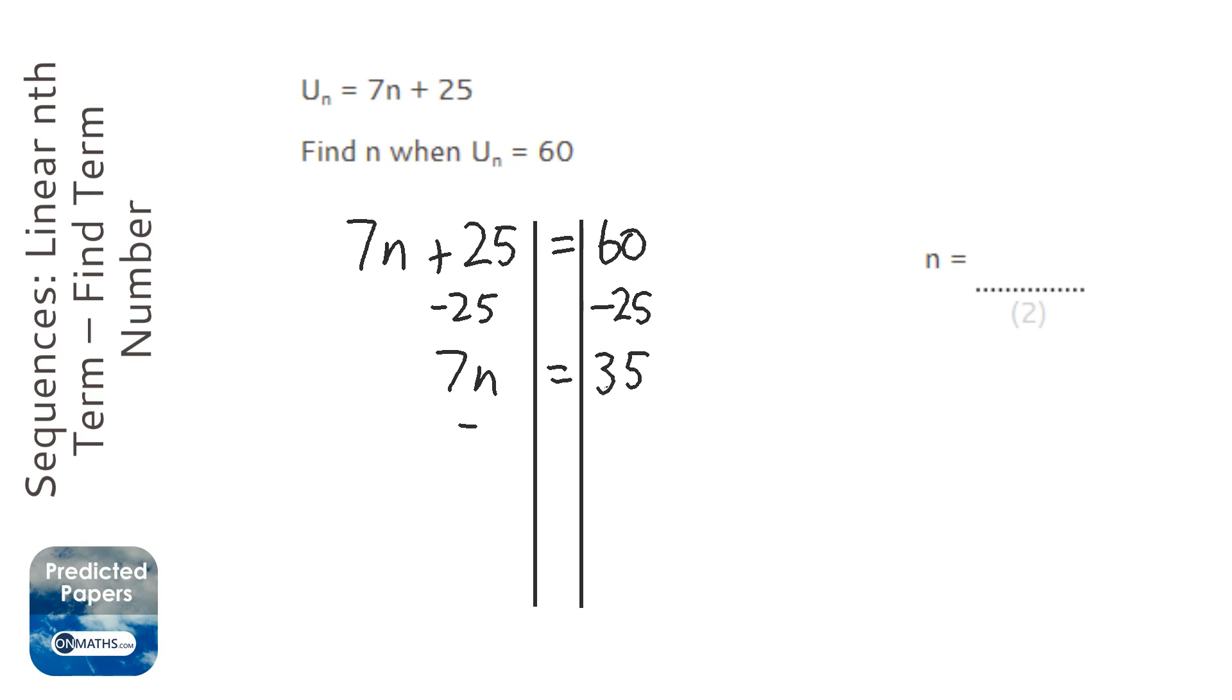And then we're going to divide by 7 on both sides. So n equals 5.